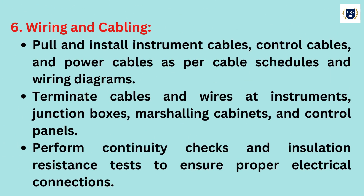Step 6: Wiring and Cabling. Pull and install instrument cables, control cables and power cables as per cable schedules and wiring diagrams. Terminate cables and wires at instruments, junction boxes, marshalling cabinets and control panels. Perform continuity checks and insulation resistance tests to ensure proper electrical connections.